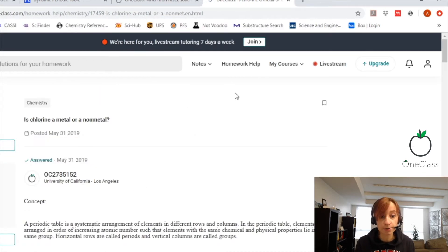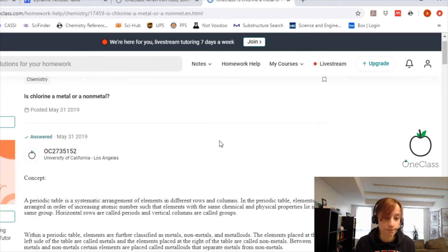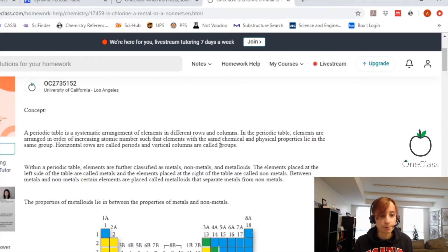Which is, is chlorine a metal or a non-metal? So to be able to determine this, you have to look at the periodic table.